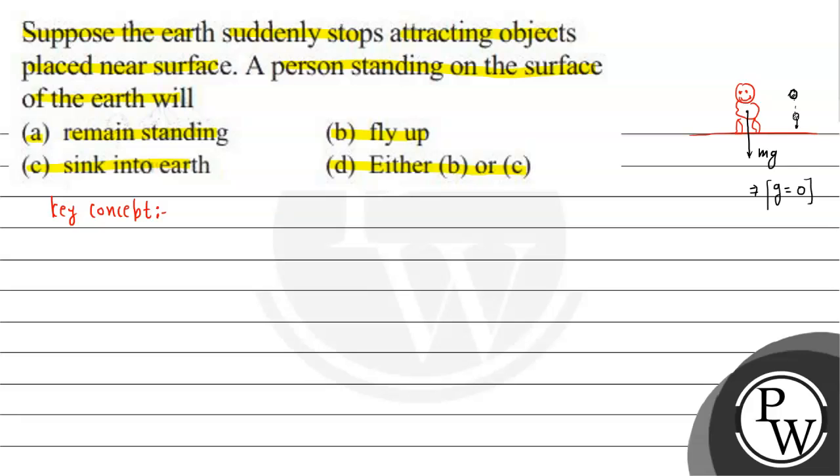What happens when the force becomes zero? A person standing on the surface of the earth, if gravity becomes zero.